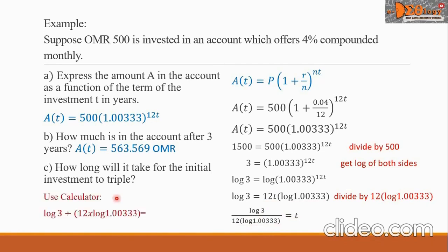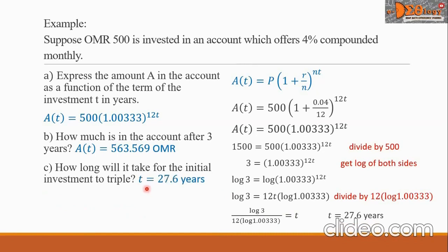Using the calculator: log 3 divided by open parenthesis 12 times log 1.00333 close parenthesis, then hit the equal sign. You will get the value 27.6 years. This is the answer for letter C. We have answered all the questions and are done with this problem.